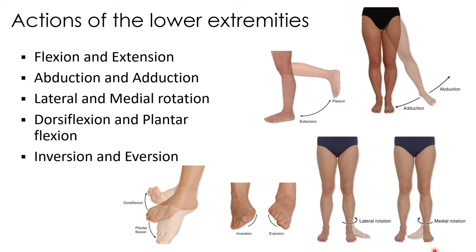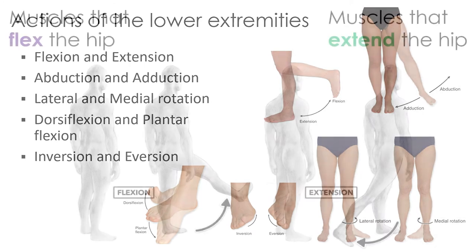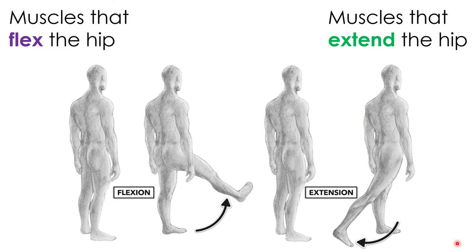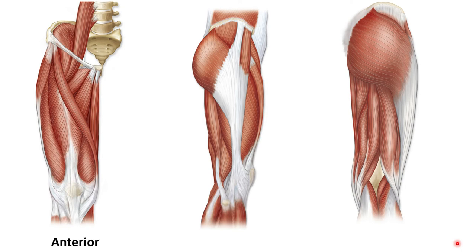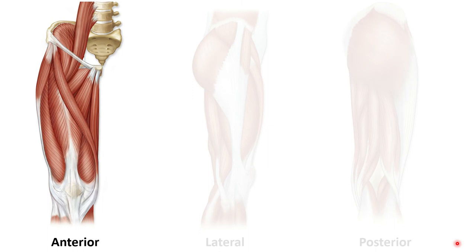Now let's consider the muscles that facilitate these movements, starting with the hip. The coxal joint is a synovial ball and socket joint, so it can flex, extend, abduct, adduct, and rotate. To flex the hip, muscles need to contract and shorten, and these muscles are found on the anterior part of the thigh. We'll focus on that anterior view when considering the muscles that flex the hip.